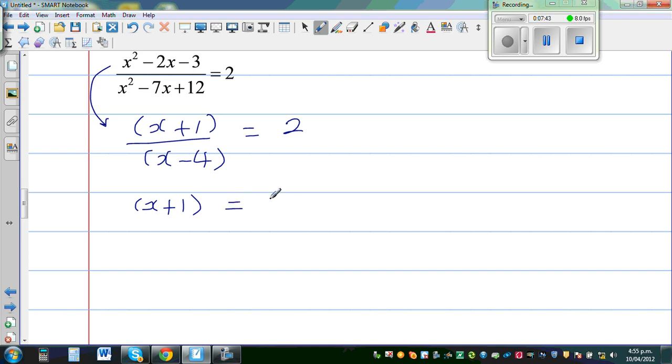Basically what I've done is multiplied both sides by x minus 4. So x minus 4 gets cancelled here. Now to expand this, this is x plus 1. And this is where most of you can do wrong. You have to multiply 2 with x and 2 with negative 4. So this is 2x minus 8.